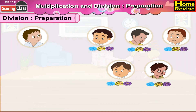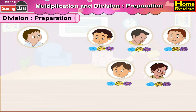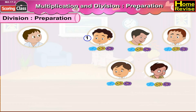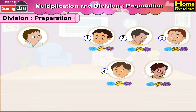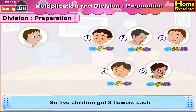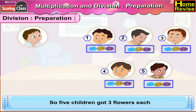Let us count the total number of children who got three flowers each. They are one, two, three, four, five. So, five children got three flowers each.